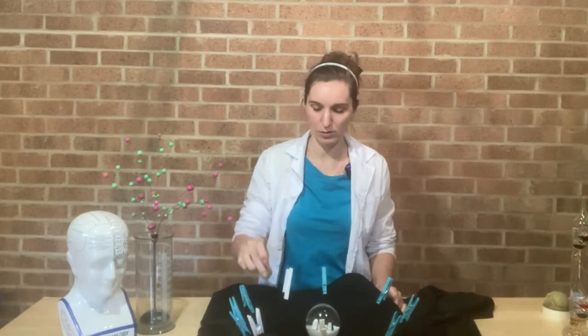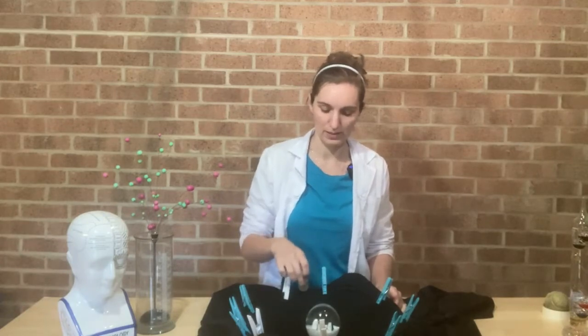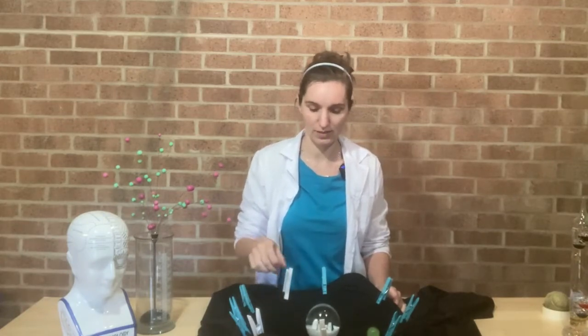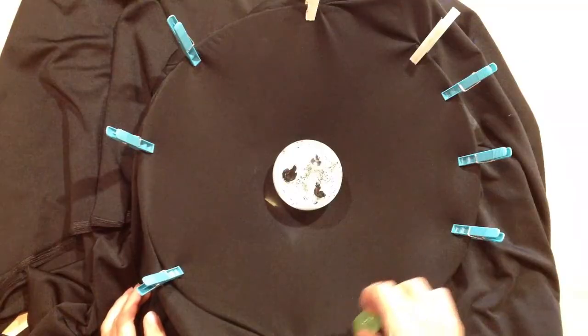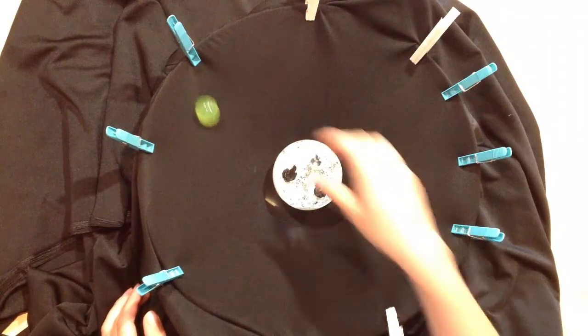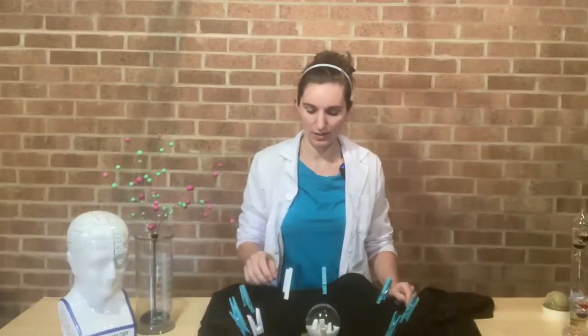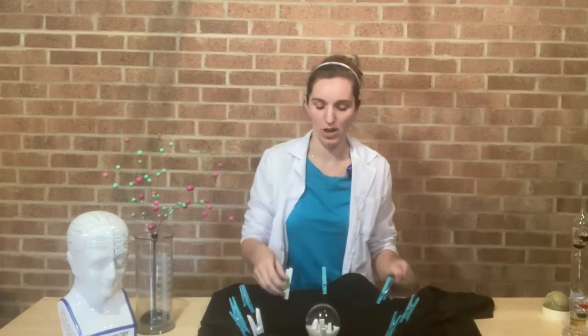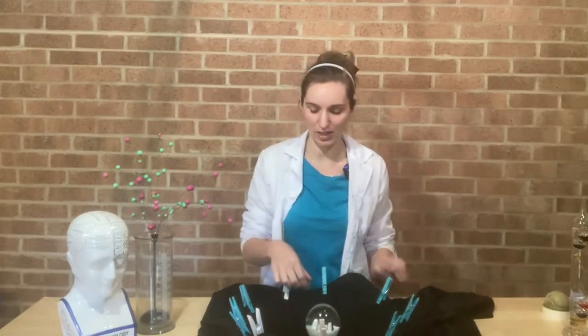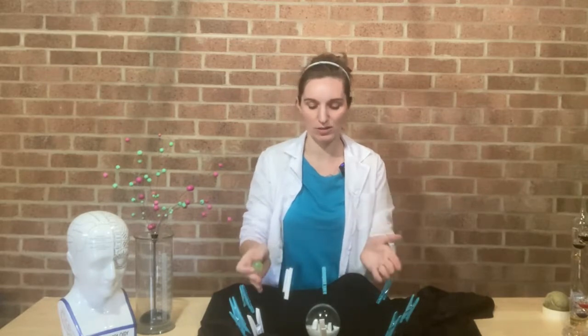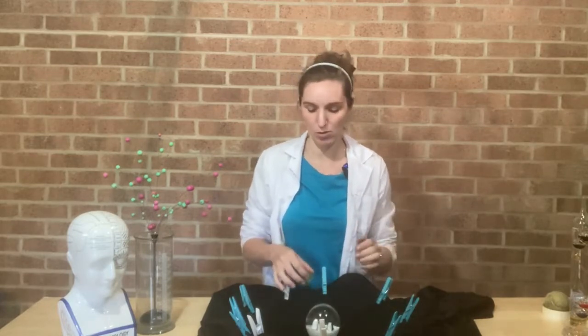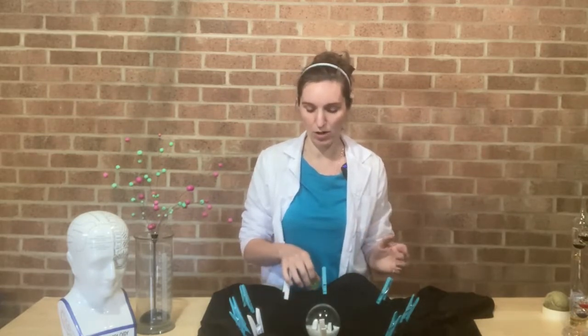So you can see it curves around. If we drop it, it curves around our object, and that's just like how gravity works. As it gets nearer the planet, there's more gravity and it will pull our ball in towards it.